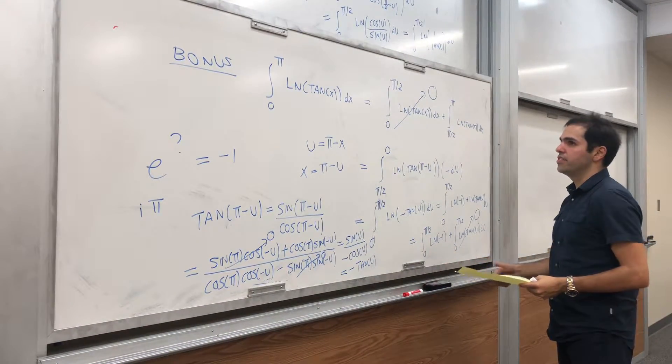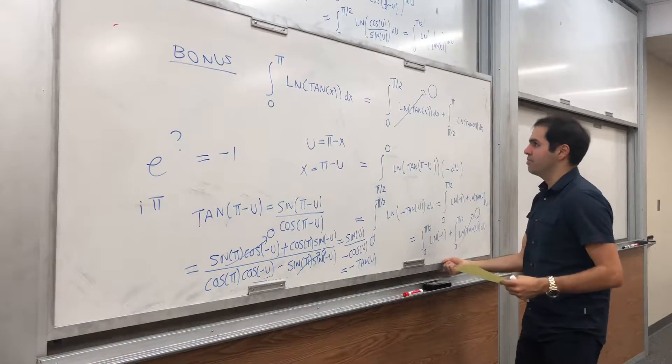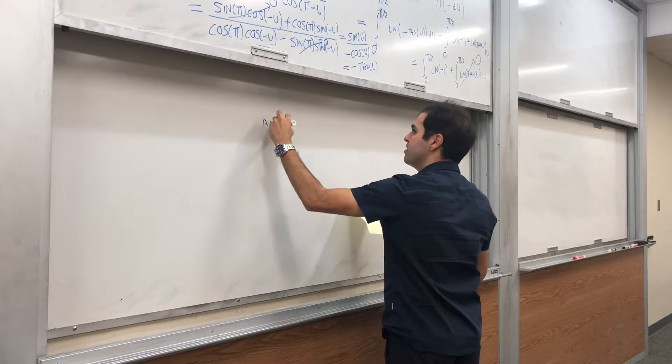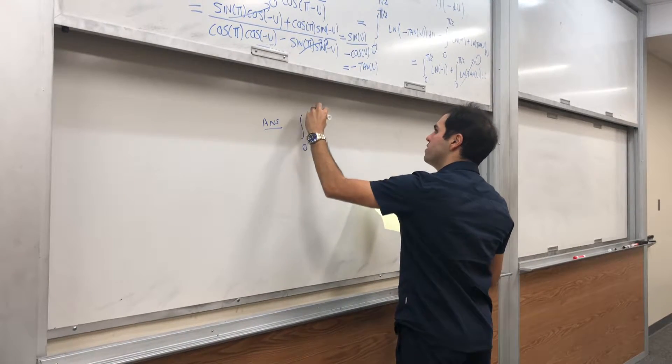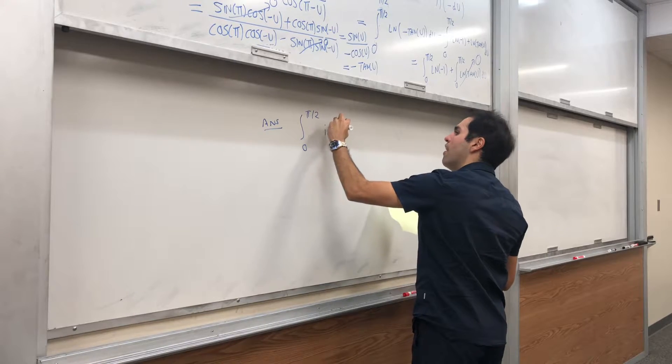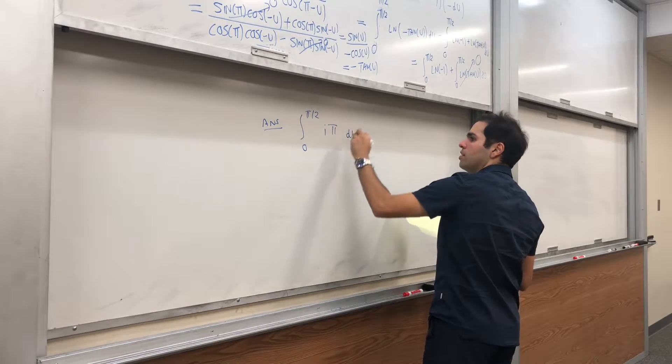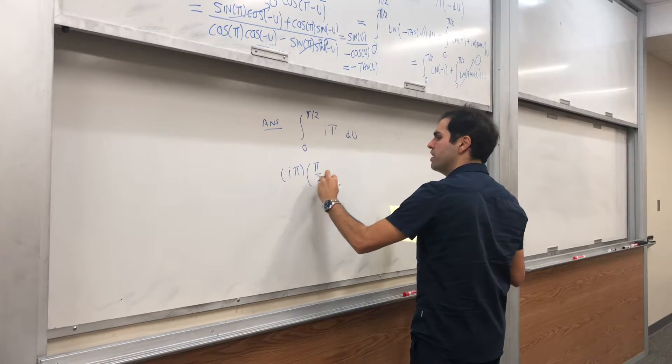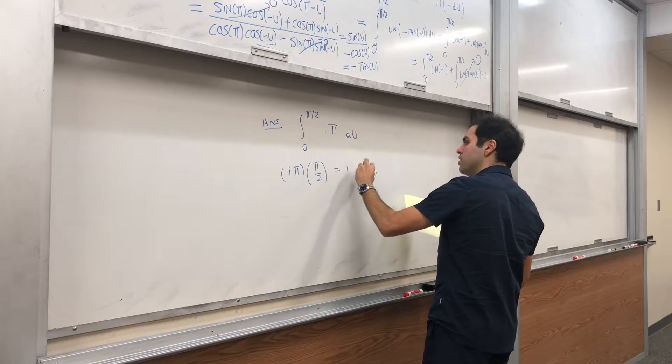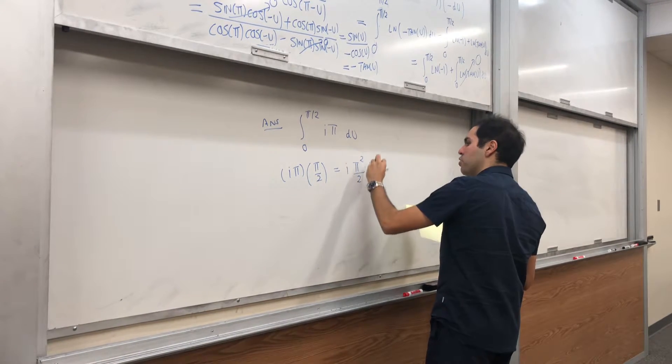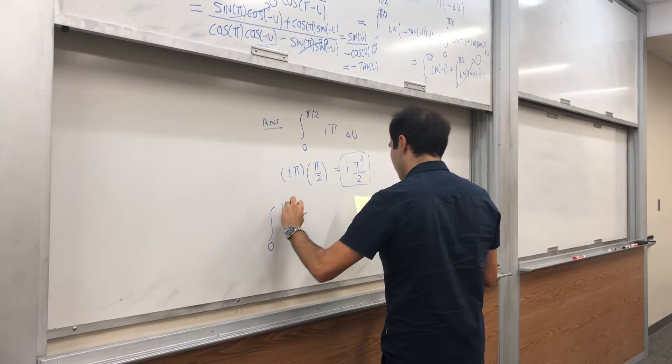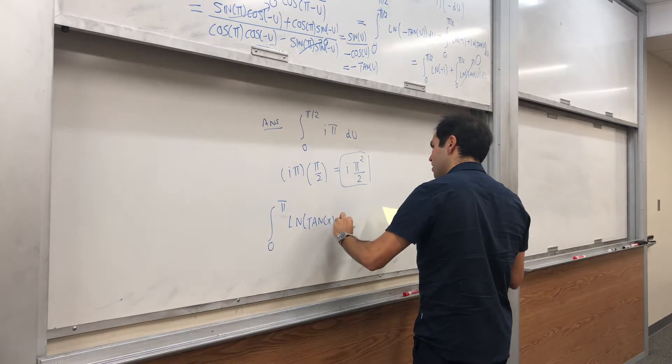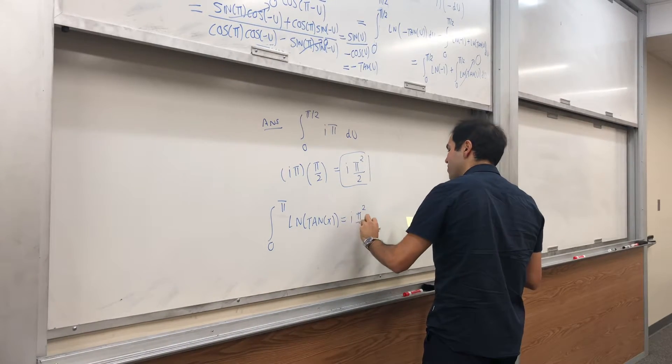So what we get is simply, let's see here, put it on the very last whiteboard. So in the end, our answer is integral from 0 to π over 2 of i π du, and this is a constant, so i π times the length of the interval, which is π over 2, so I got i π squared over 2. In other words, the integral from 0 to π of ln of tangent of x is i π squared over 2.